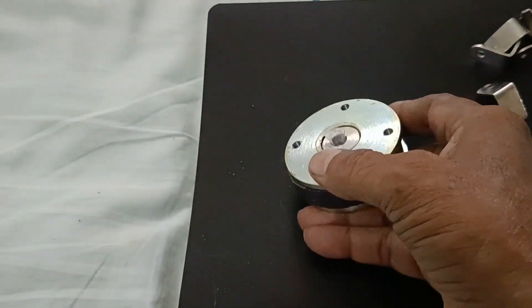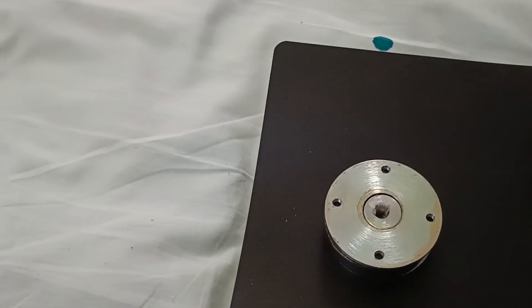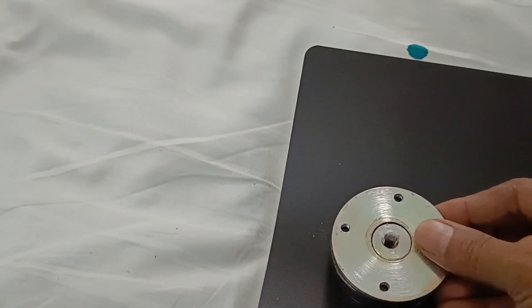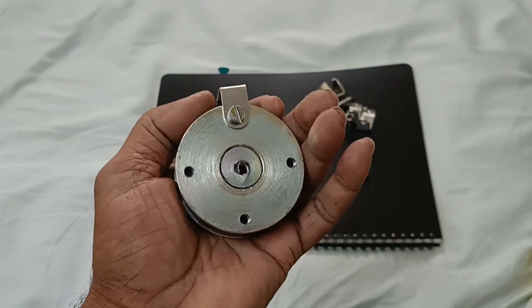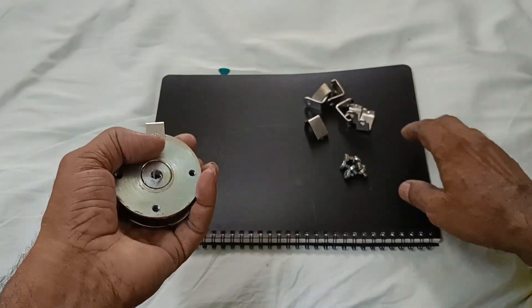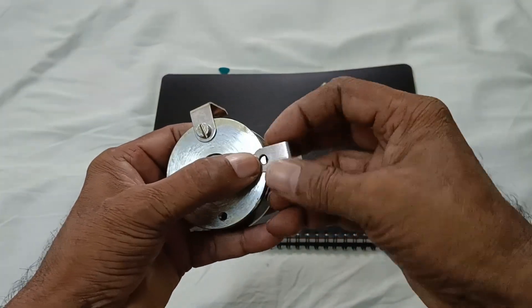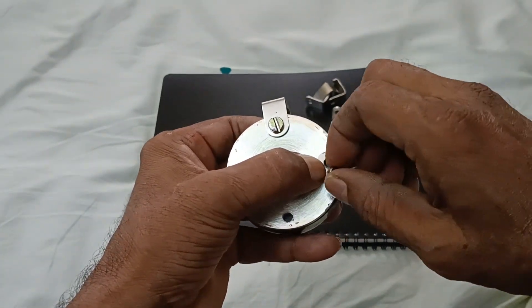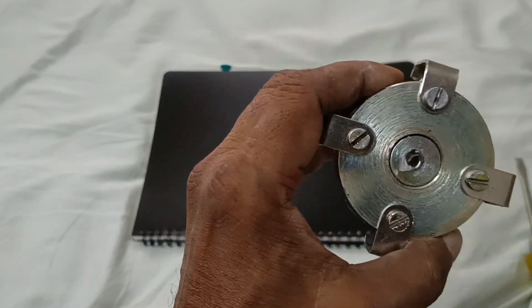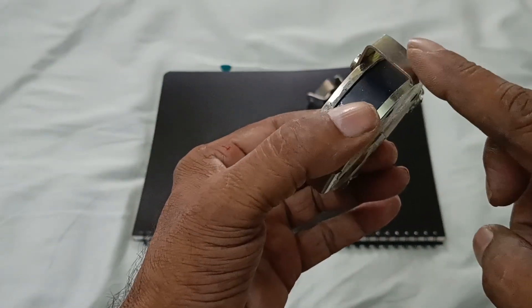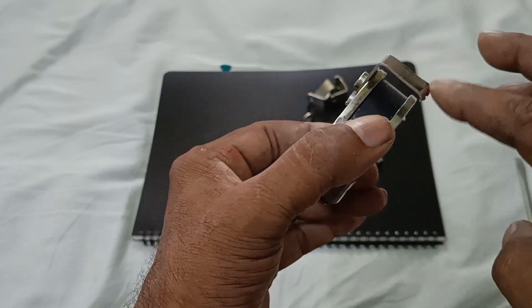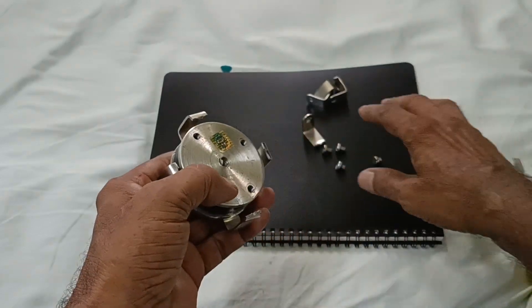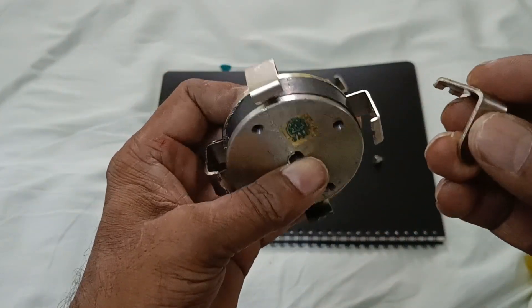This is the speaker magnet. Now I'm going to fix the L plate. The North pole is diverted to the radial surface using the L plate. Now I'm going to fix the L plate for South pole.